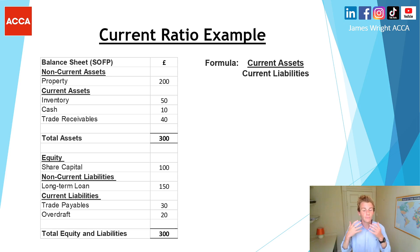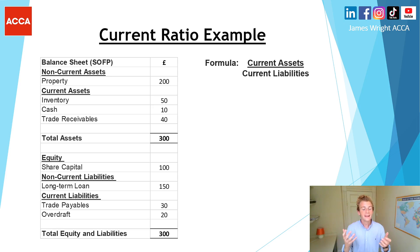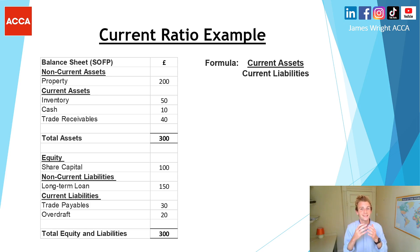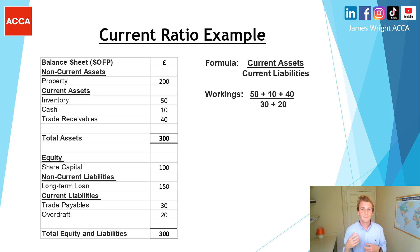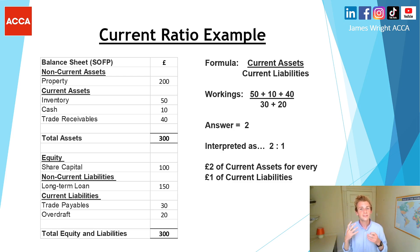Now for a working example you can apply to your own papers. The formula is current assets divided by current liabilities, and we have a balance sheet on screen with total assets equal to 300, equal to total equity and liabilities of 300. Picking out current assets: 50 plus 10 plus 40 — make sure you show all your workings. Dividing by current liabilities gives us an answer of 2, interpreted as a 2 to 1 ratio — two pounds worth of current assets for every one pound of current liabilities.